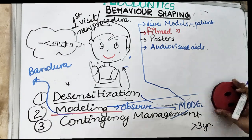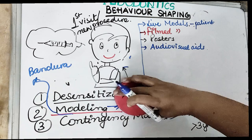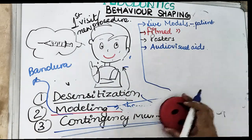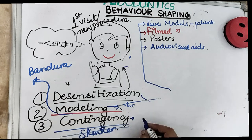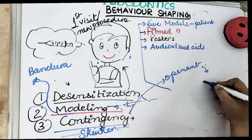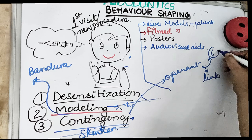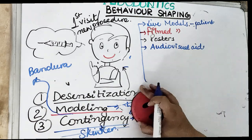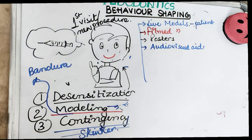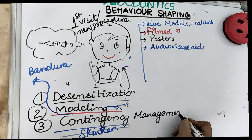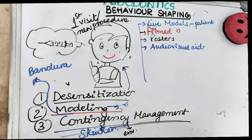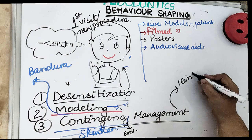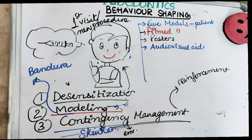Coming to the third technique of behavior modification, which is contingency management. You must be familiar with the concept of contingency from the operant conditioning theory, which we have already covered. If you haven't watched that video, I'll give you a link in the description below and the i button. Contingency is the relationship between the operant and the consequences, and the operant is the behavior that operates or controls the environment. We will be talking about positive reinforcement, negative reinforcement, and punishment.